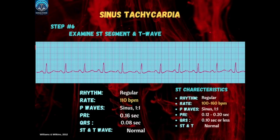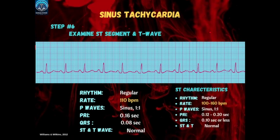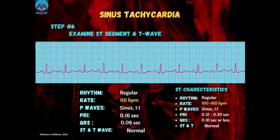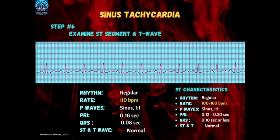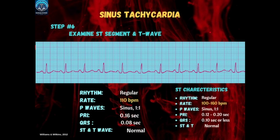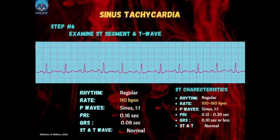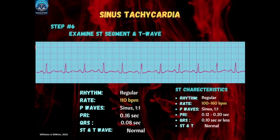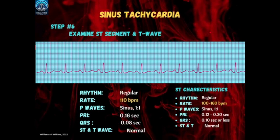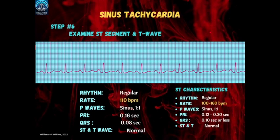To summarize our practice strip EKG analysis: the rhythm was regular, the rate was 110 beats per minute, the P waves were sinus with one P wave for every QRS, the PR interval averaged 0.16 seconds consistently across the strip, the QRS complex was about 0.08 seconds, and the ST and T waves were normal. The only difference from normal sinus rhythm is that the heart rate is greater than 100 — in our strip it was 110 — so this is sinus tachycardia.